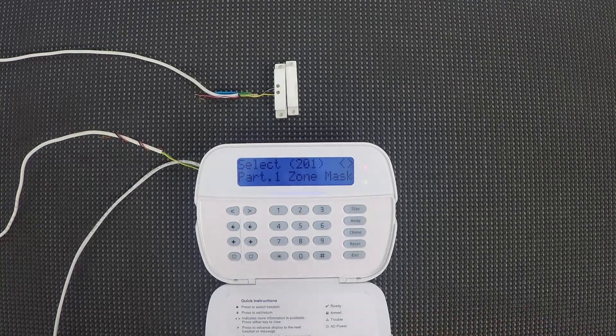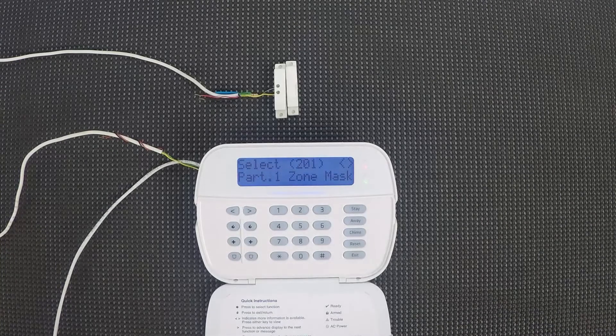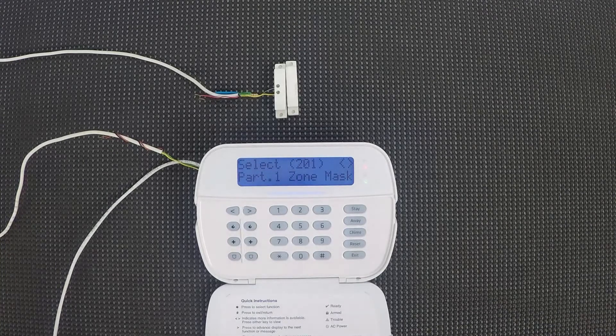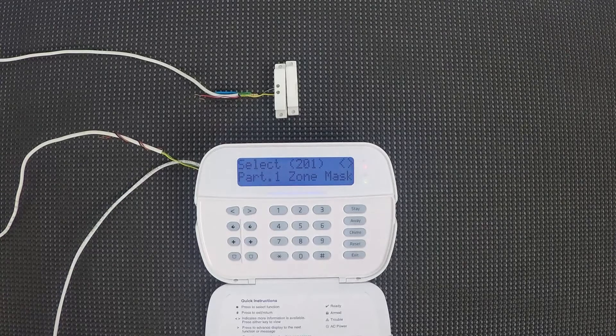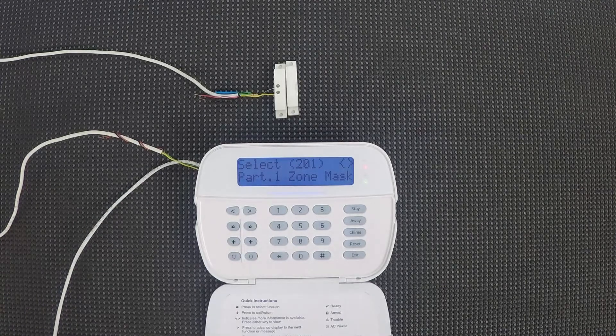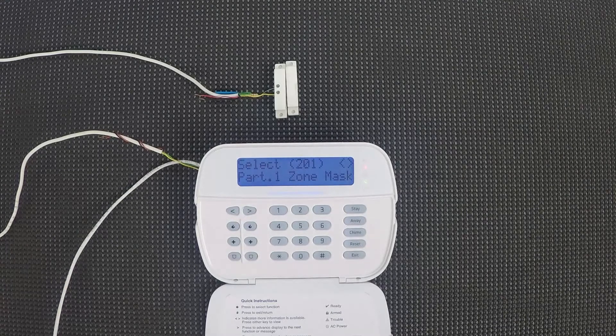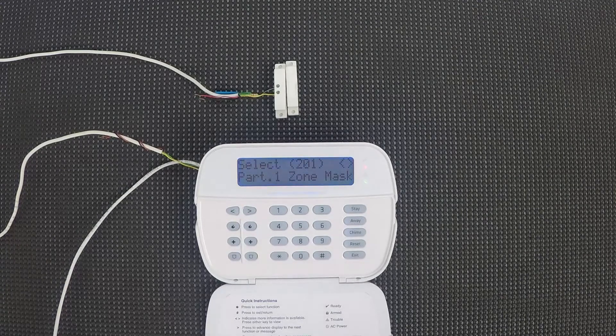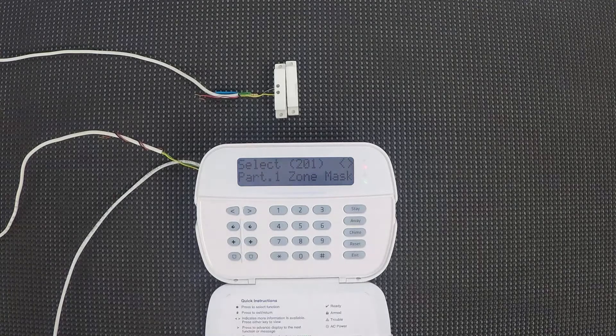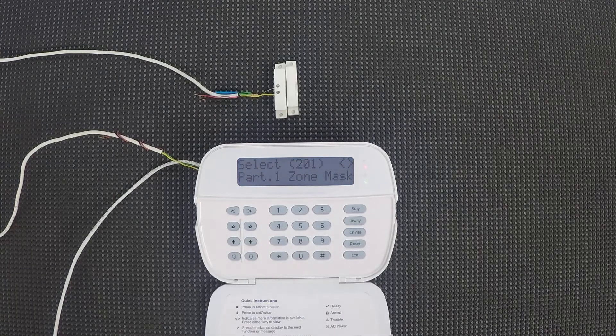So, the next thing I'm gonna do is go to the keypad programming section for this keypad. So this keypad is keypad one, it's my only keypad, so it's in slot one. If this was in slot two, three, four, whatever it is, you'll just have to go to the programming section for that keypad.